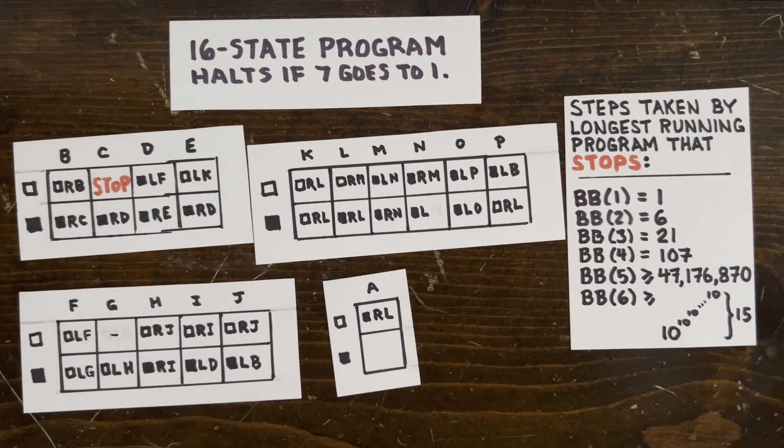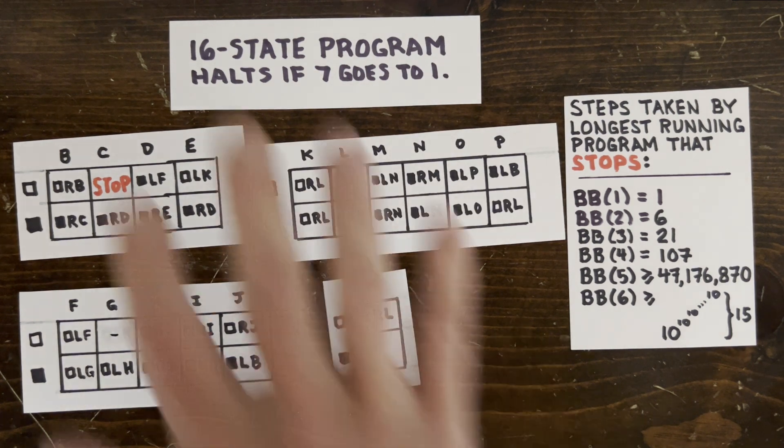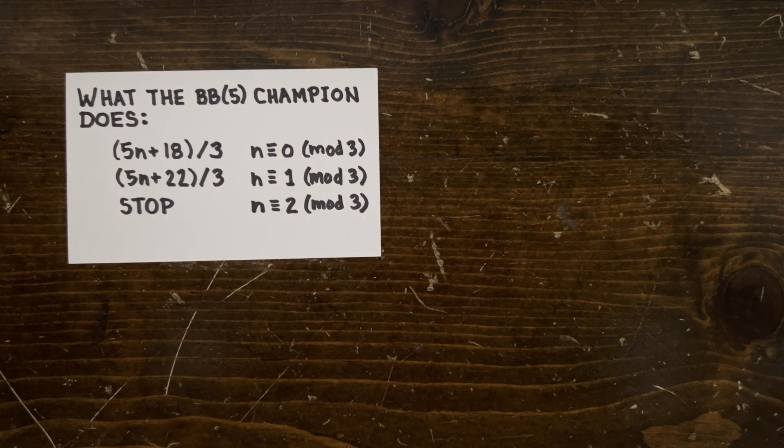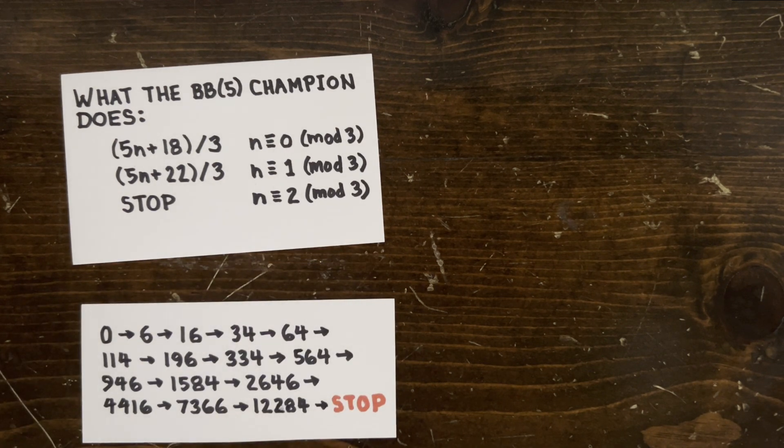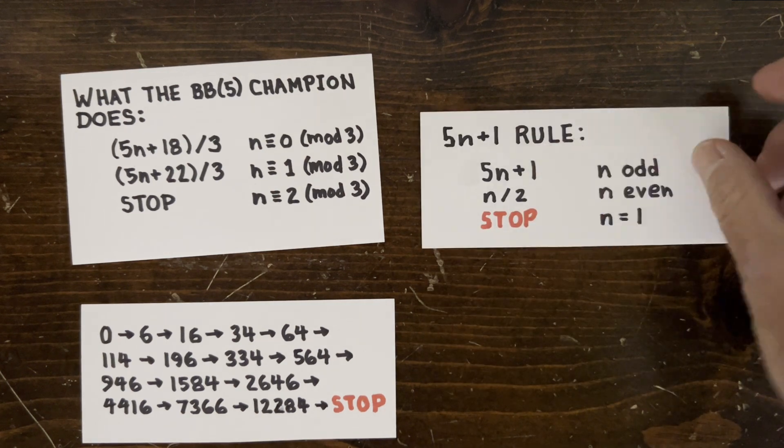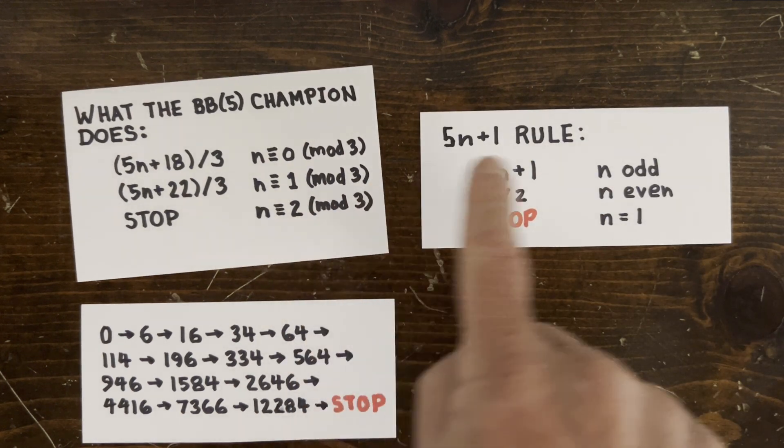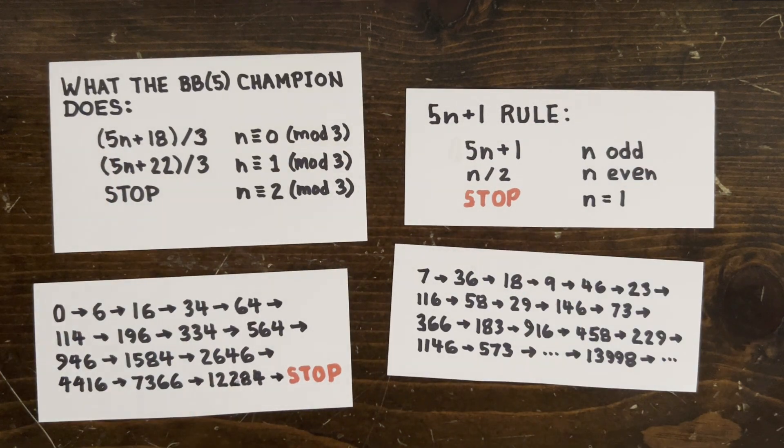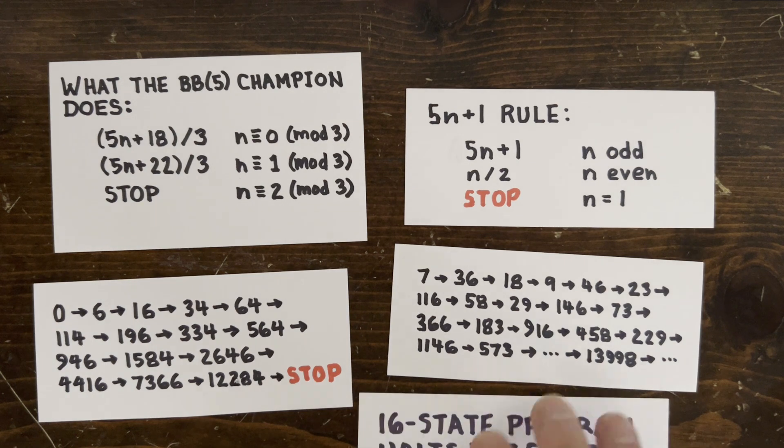And last time we saw a 5-state machine that computes this 3N plus 1-like rule. And I think it's kind of weird that nature uses its precious small machines to compute weird functions like this, instead of something we like. Well, probably the 5N plus 1 on 7 conjecture can be resolved by a Turing machine with fewer than 16 states though. But how small?